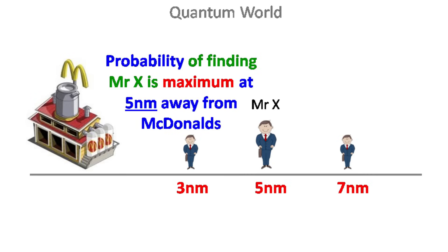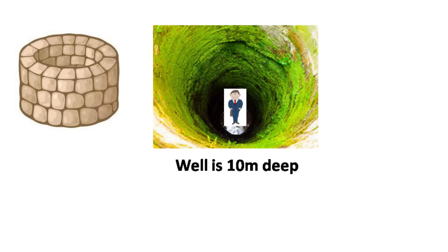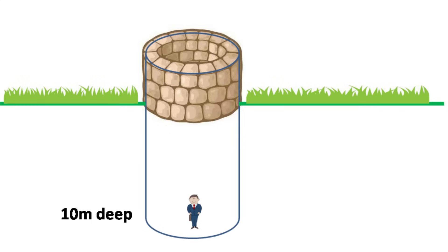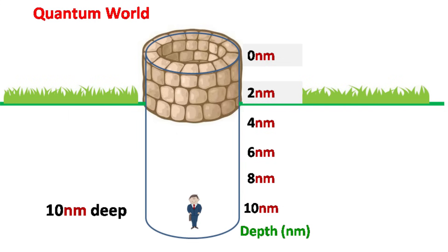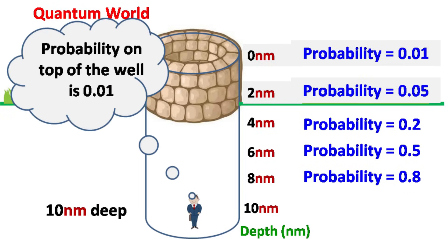Now based on this, let's try to understand the quantum tunneling effect. Let's say Mr. X is trapped in a well ten meters deep. The well is so deep it's impossible for Mr. X to reach the top. However, the scenario will be different in quantum mechanics. If the depth of the well is ten nanometers, then because the location of Mr. X is given by probability, Mr. X will have some probability to reach the top of the well.